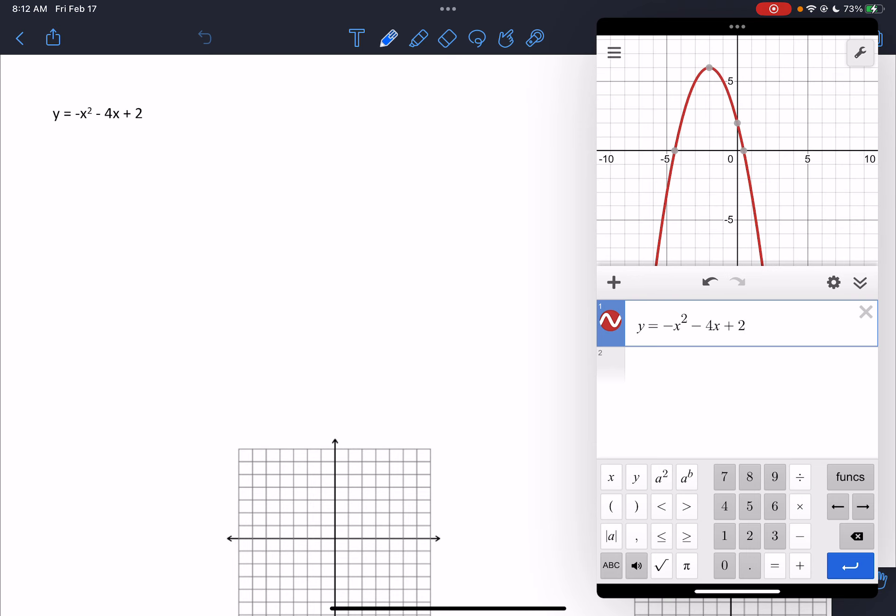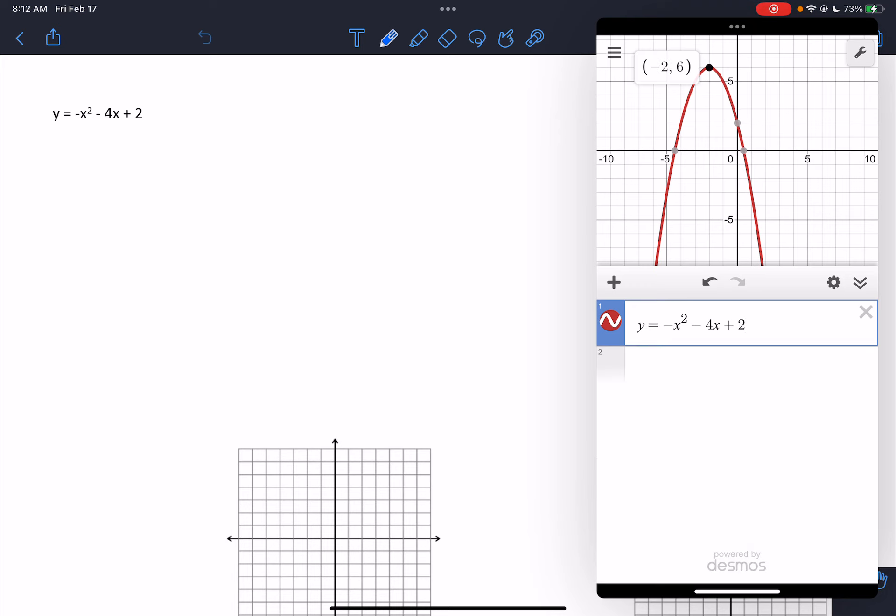So I get a graph looking something like this. And so when I go to graph this, what I have to do is I have to find my vertex first. Because when I graph it, I need to include my vertex in the middle and then two points on the left and two points on the right.